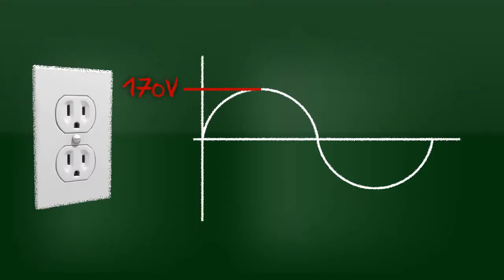The voltage from the wall plug in North America is 120 volts RMS. In amplitude, it's equivalent to 170 volts.